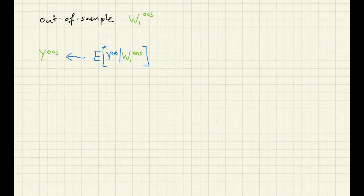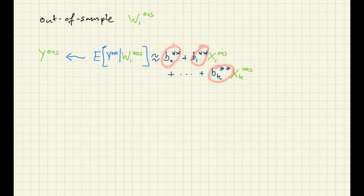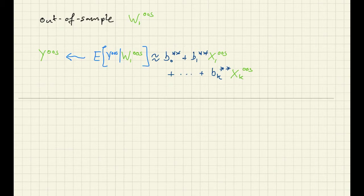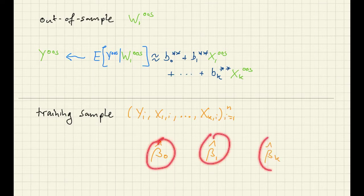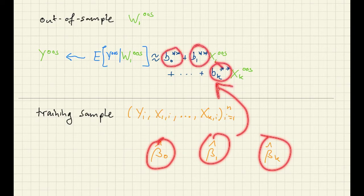the conditional expectation. We're going to replace the conditional expectation by something a little bit less complex, a best linear prediction in certain features. We don't know what these coefficients are and we have to estimate them. And to do that we're going to need a training sample. And from this training sample we can obtain the OLS estimators.